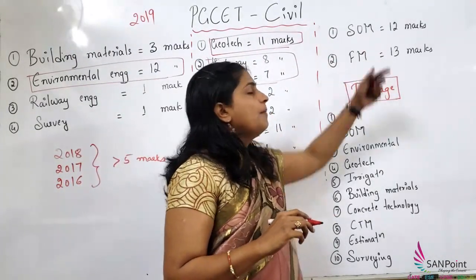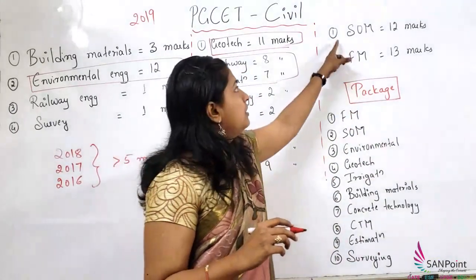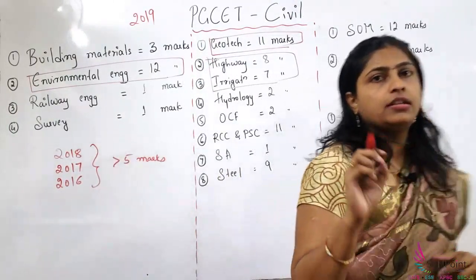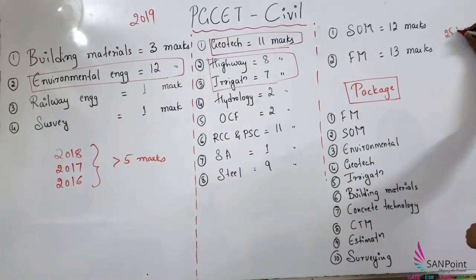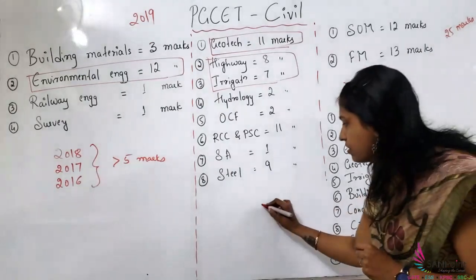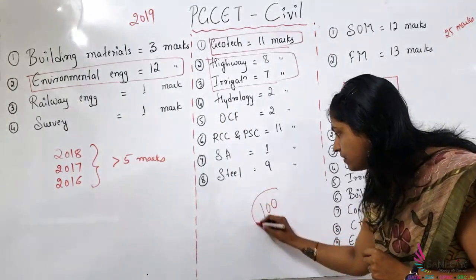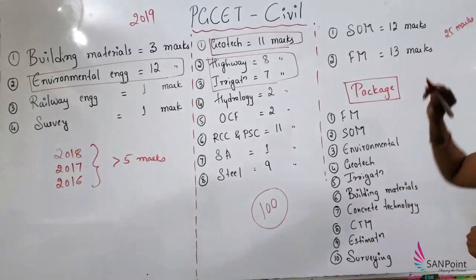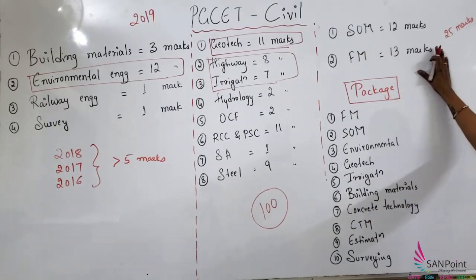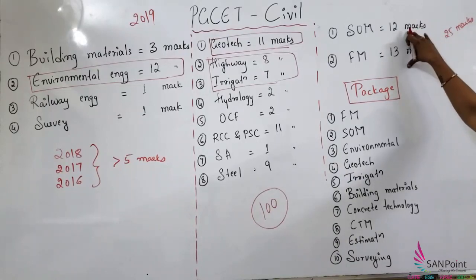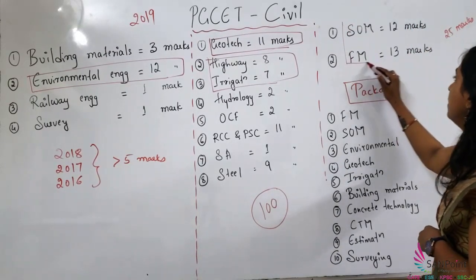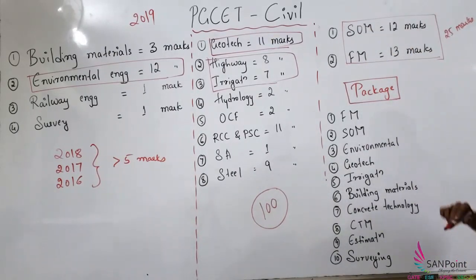Next, SOM and FM — these are again very, very important in terms of weightage. These two topics together constitute 25 marks out of your entire 100-mark question paper. The weightage of FM and SOM is the same for other exams also, so you can consider these subjects as major ones.